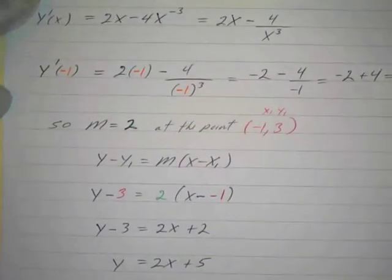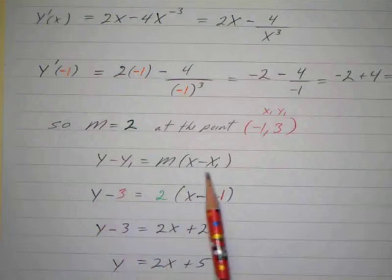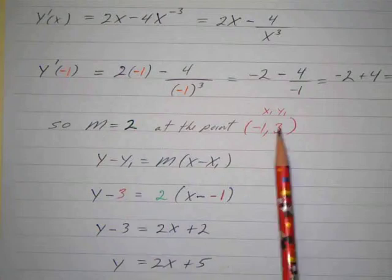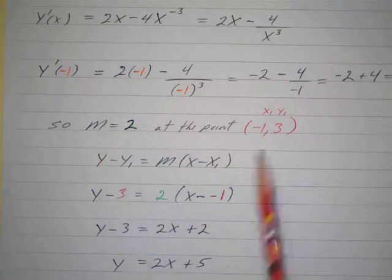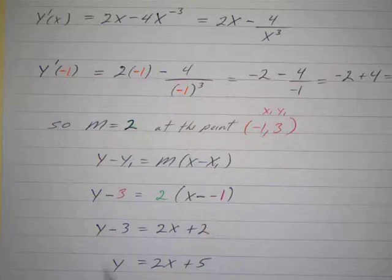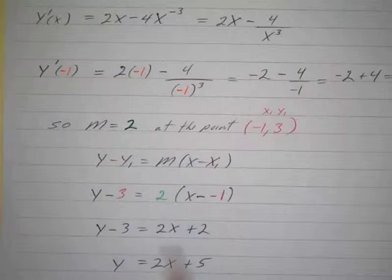So again, we use our point slope form, our good old favorite point slope form, y minus y1 equals m times x minus x1. Here's my m is 2, and my y1 is 3, and my x1 is negative 1, so I just put that in. And we get y minus 3 equals 2 times x minus negative 1, which is y minus 3 equals 2x plus 2. If I subtract 3 from both sides, y equals 2x plus 5. There's the equation of my tangent line.